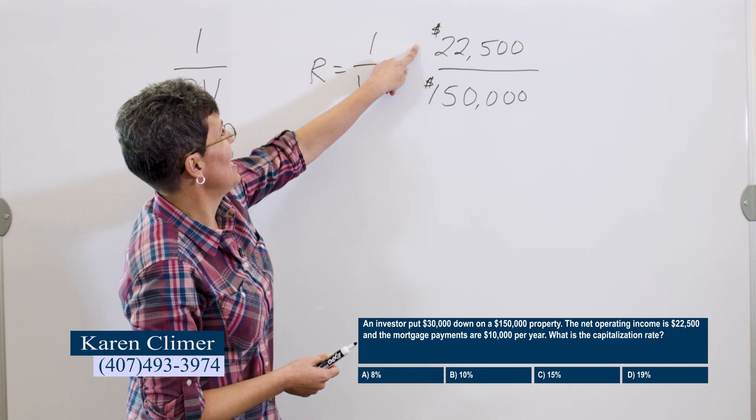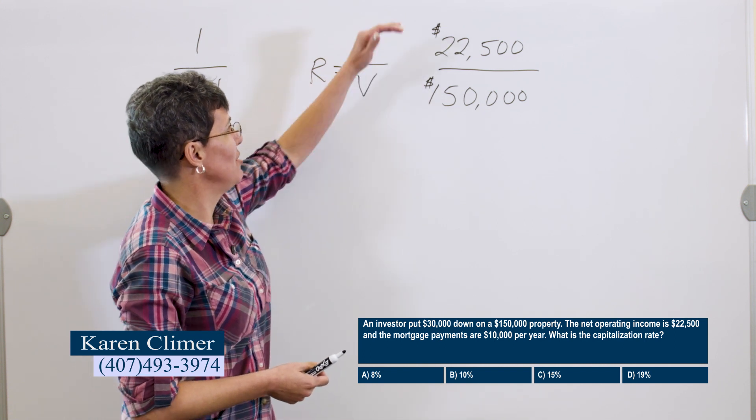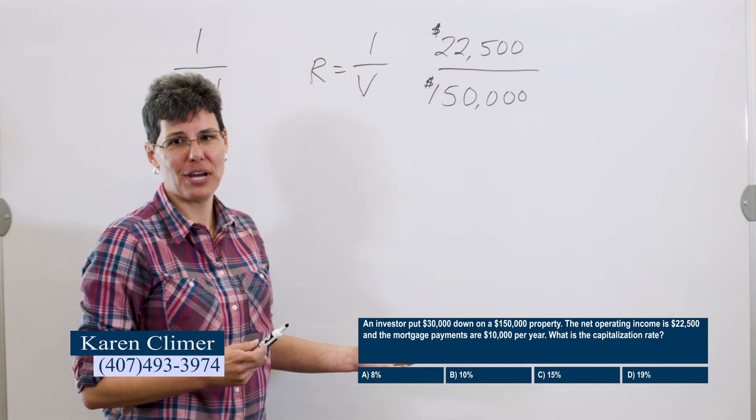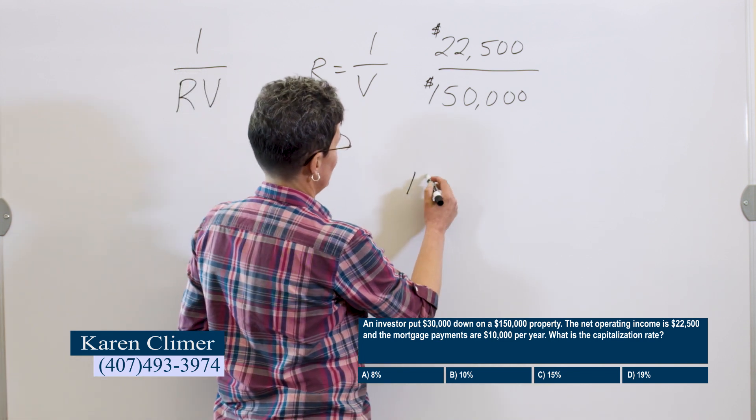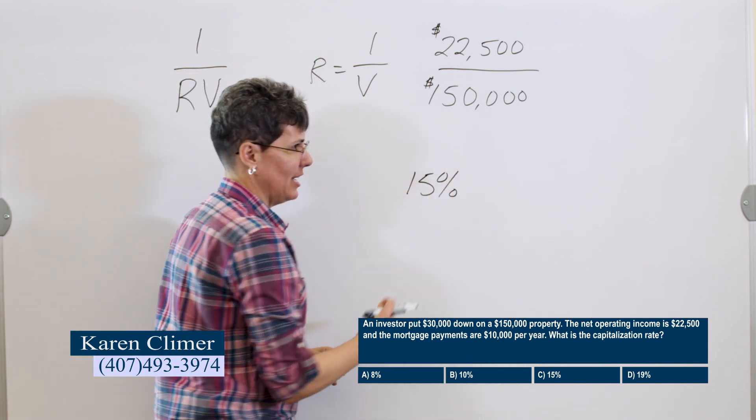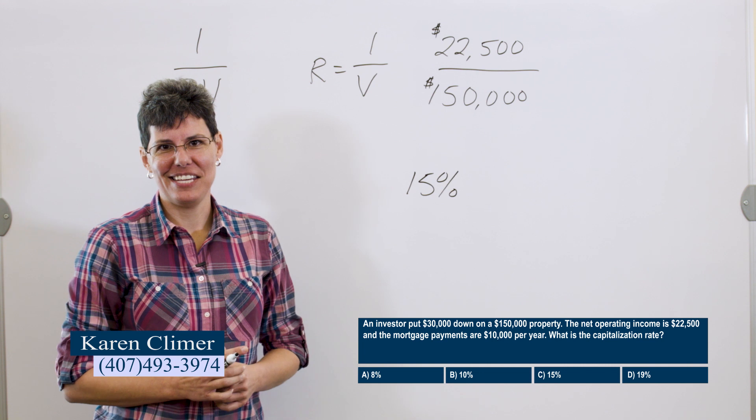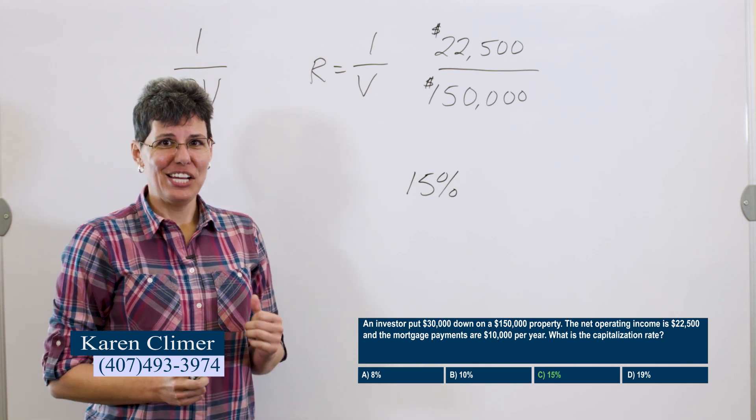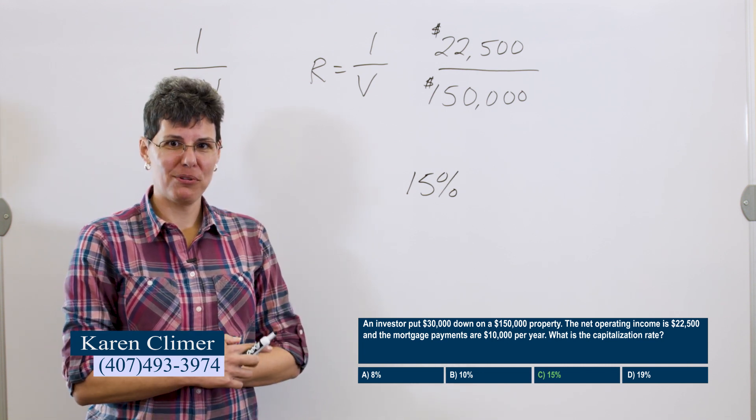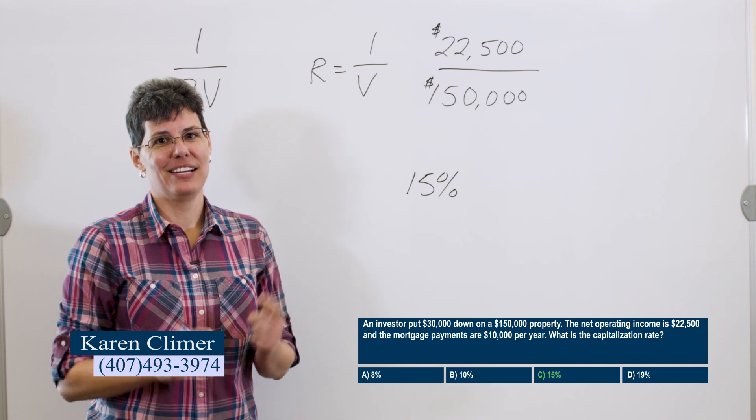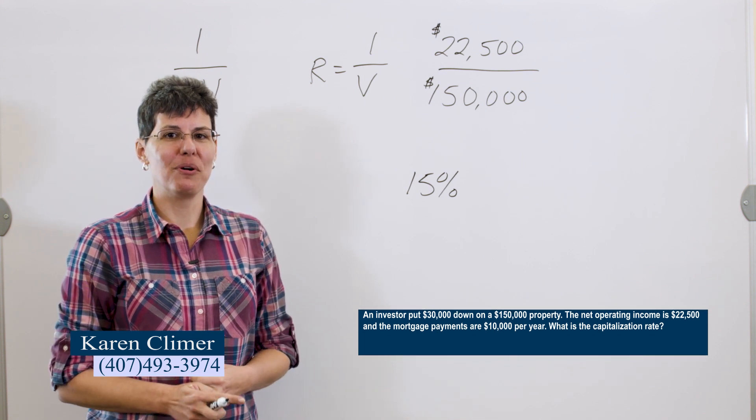So we go back to this. We've got the net operating income and the value. And then you just put this in the calculator, top divided by bottom, and it's going to give you 15%, which in our case is C. So we've solved one problem for value. We've done one for rate. Stick around and I'm going to show you one where we do income.